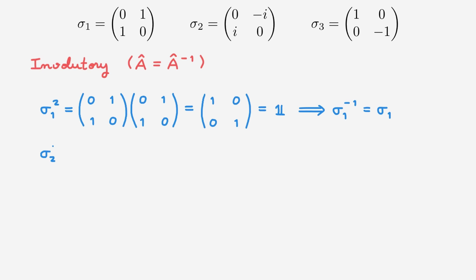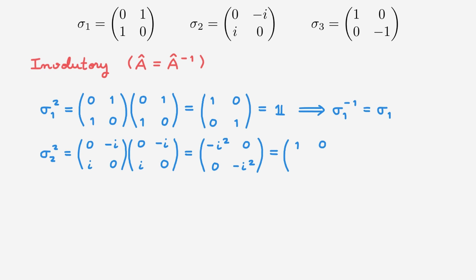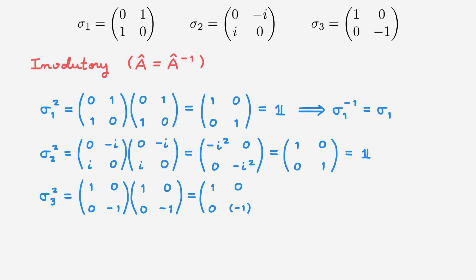Moving on to sigma 2 squared, applying matrix multiplication we end up with -i squared, 0, 0, -i squared, which reduces to 1, 0, 0, 1 — the identity matrix. For sigma 3 squared, we get 1, 0, 0, -1 all squared, which again reduces to the identity matrix. These relations confirm that the Pauli matrices are their own inverses, where the sub-index k refers to a generic Pauli matrix with k running from 1 to 3.